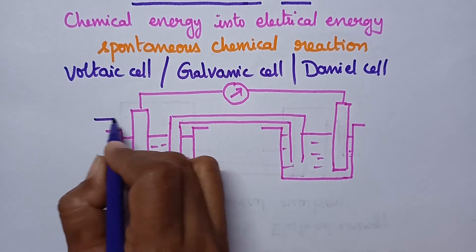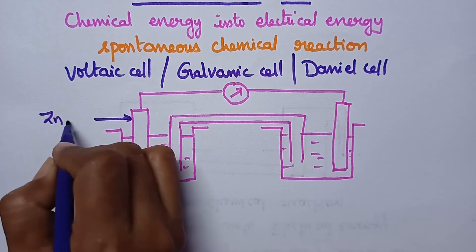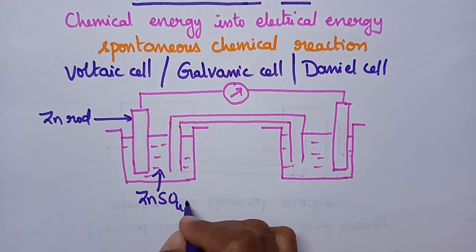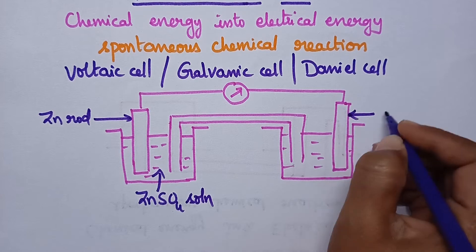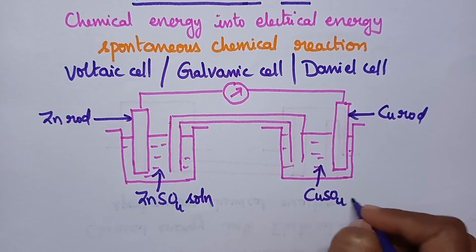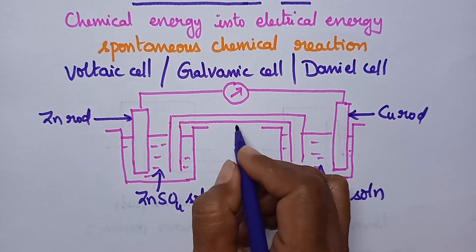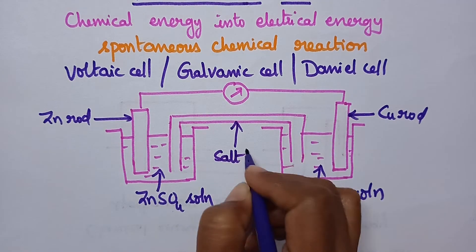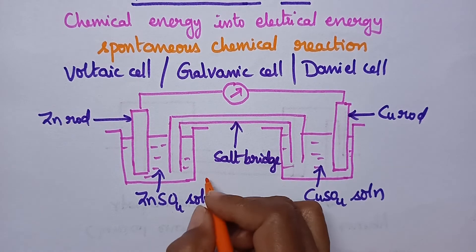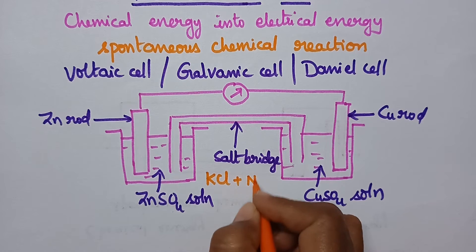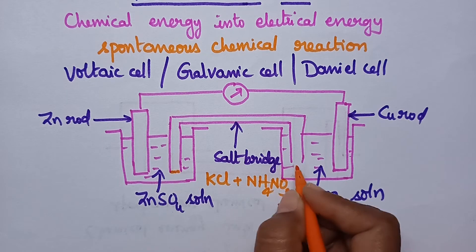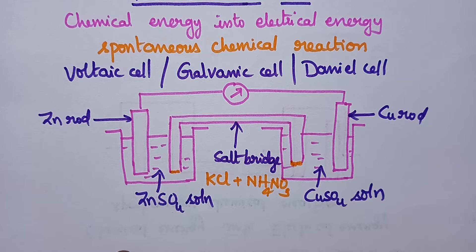A galvanic cell consists of a zinc rod dipped in zinc sulfate solution and a copper rod dipped in copper sulfate solution. These two solutions are connected through a salt bridge, which is made up of potassium chloride and ammonium nitrate solution. Through the salt bridge, it is possible to maintain electrical neutrality.